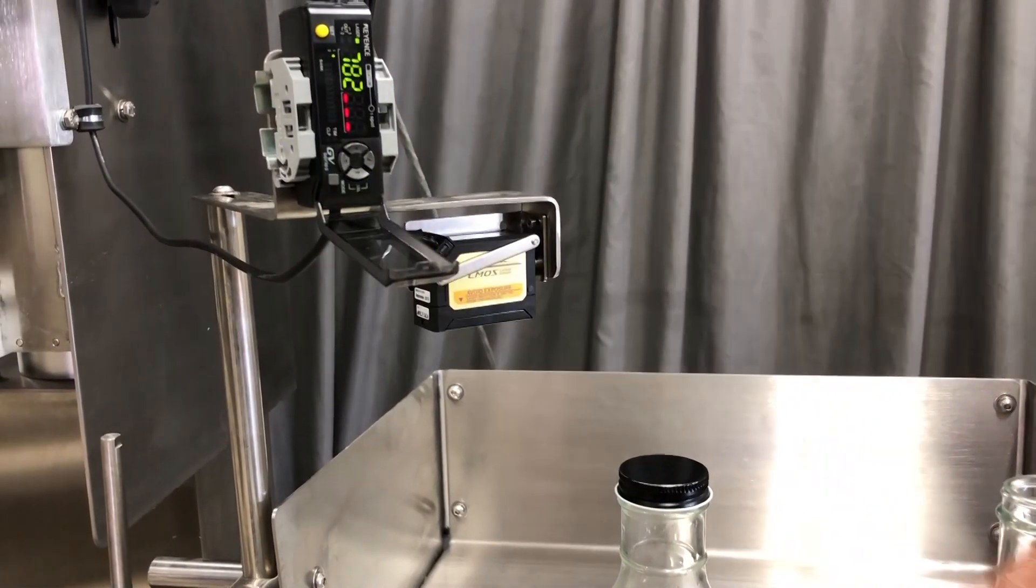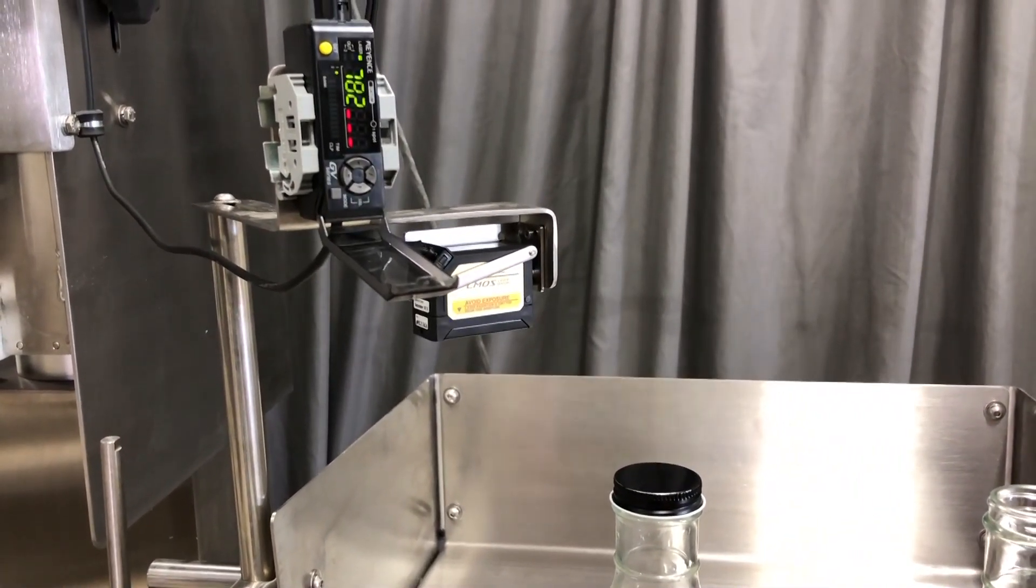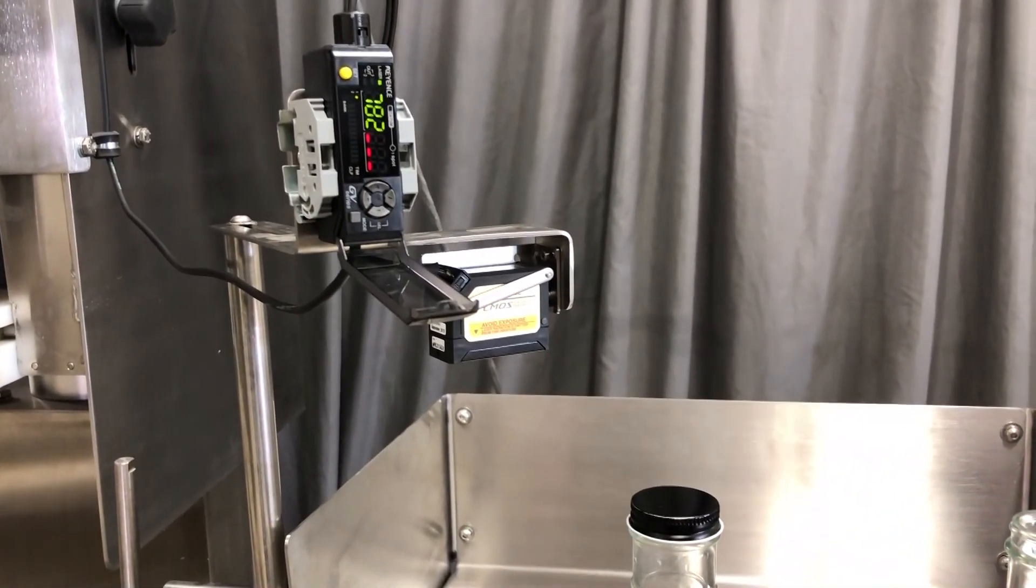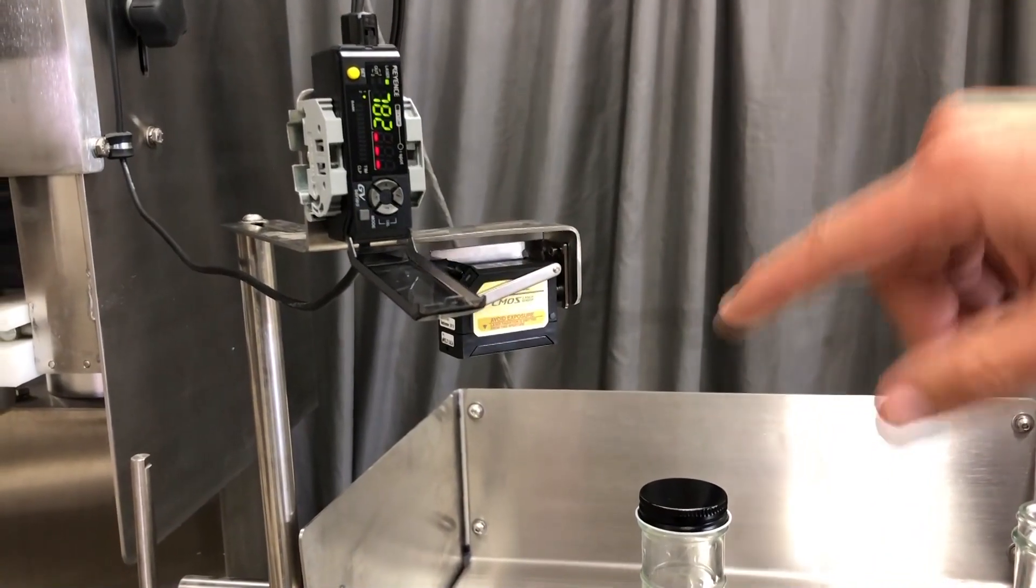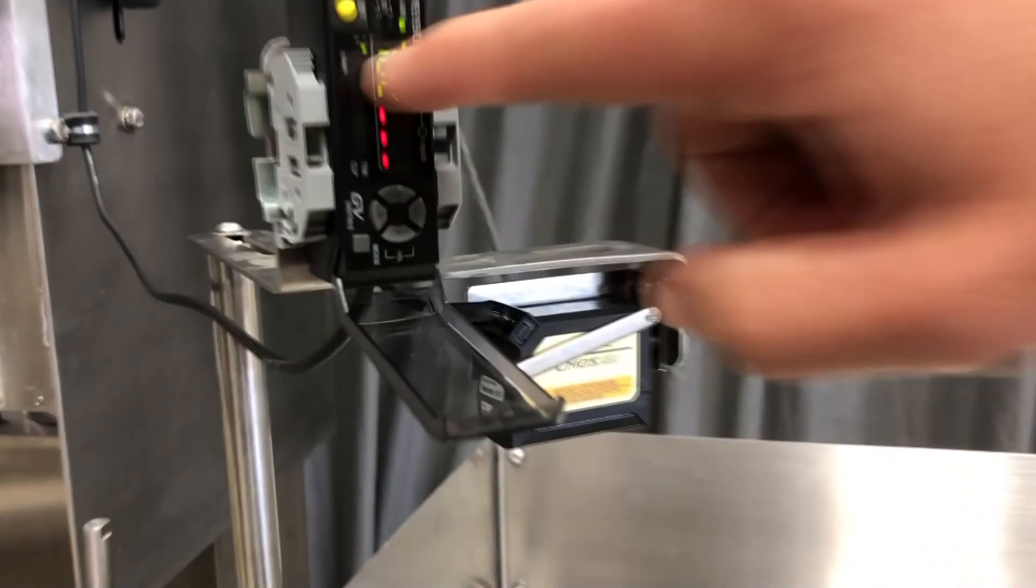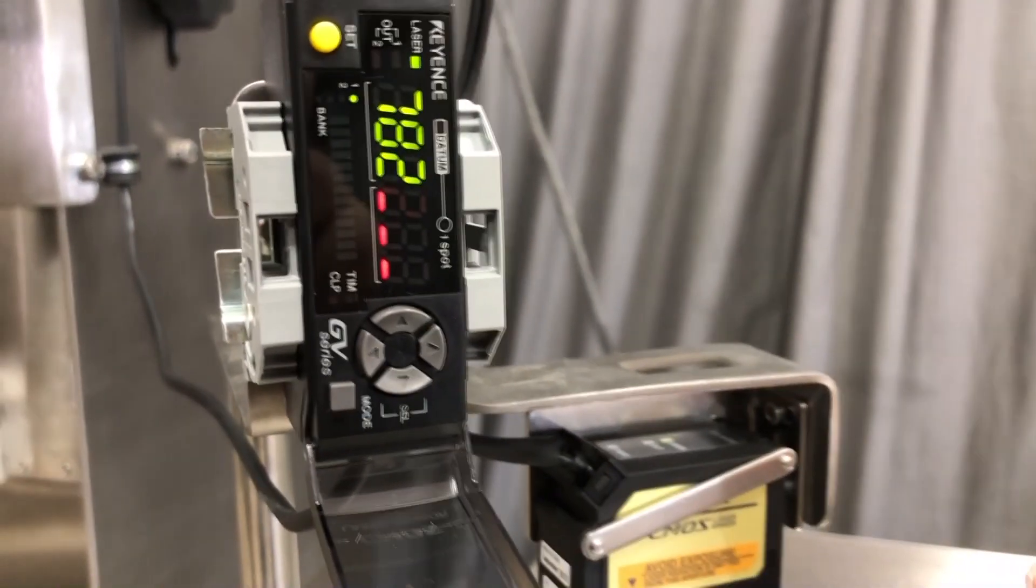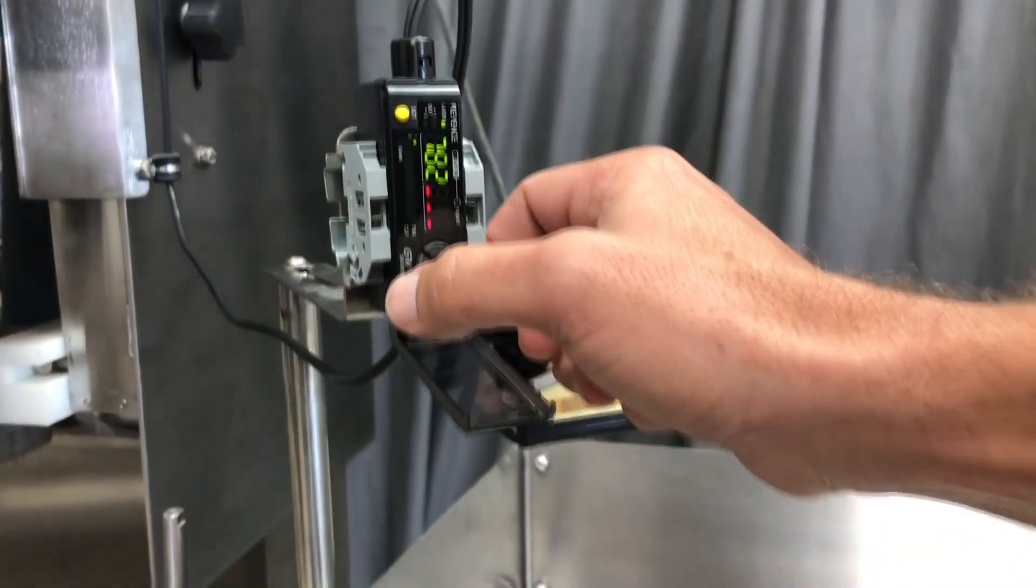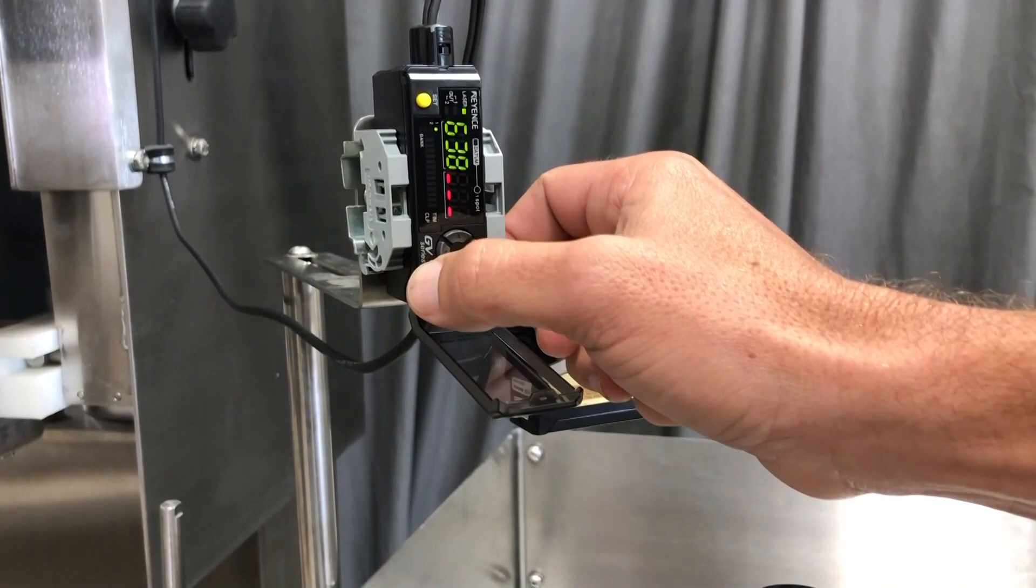To adjust the sensor, we took the air out so we're not getting the bottles knocked over. To adjust the area, you're going to have this little number here, one and two, which is going to be your upper area. Then you're going to have one blinking and two blinking, which is your lower area.